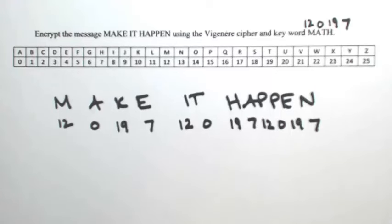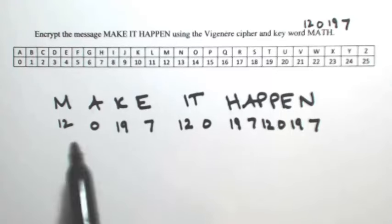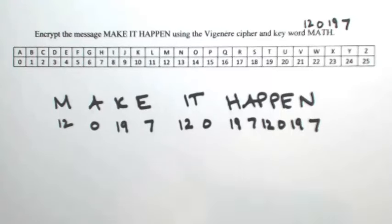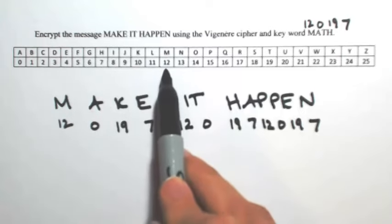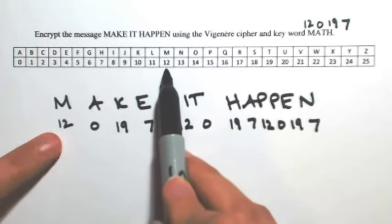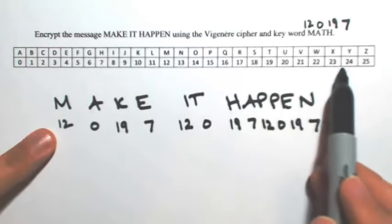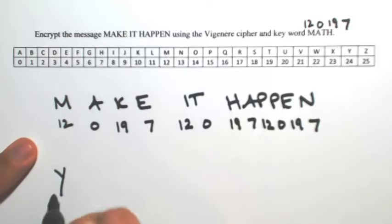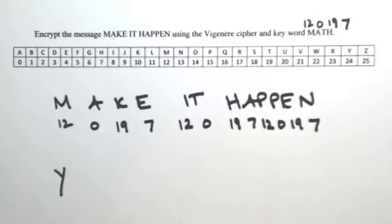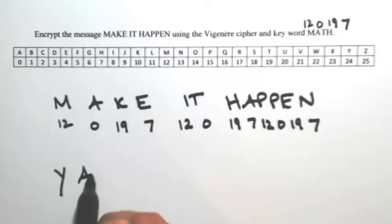Now I'm going to shift these letters by the number underneath them. The M, which is number 12 in the alphabet, gets shifted by 12, so it goes to 24 — that becomes a Y. The A is shifted by nothing, so it stays the same.